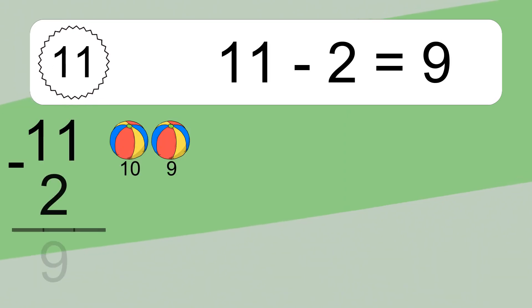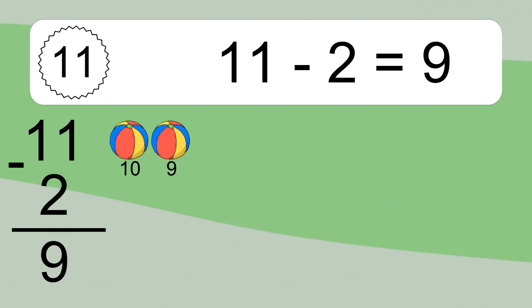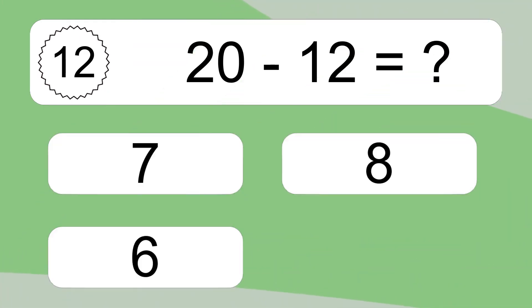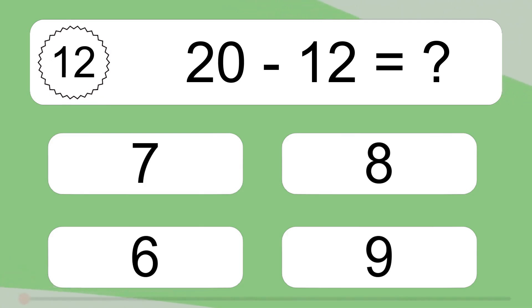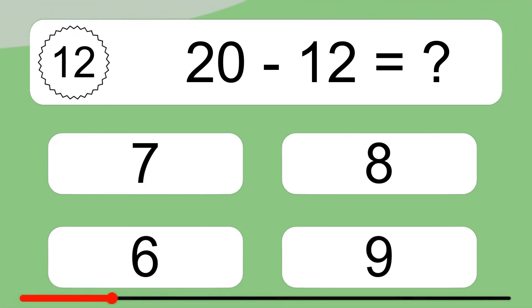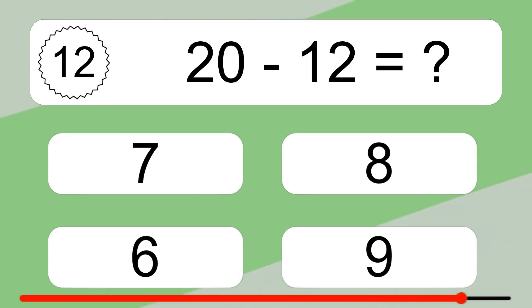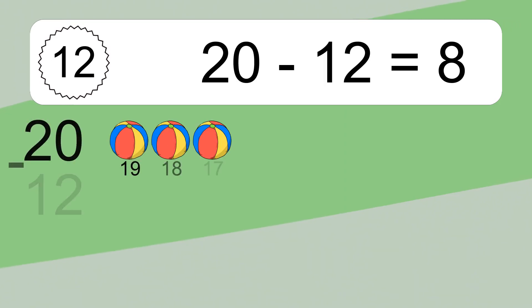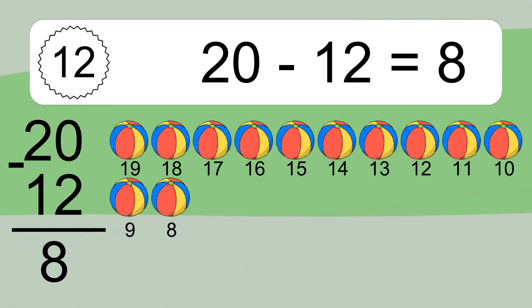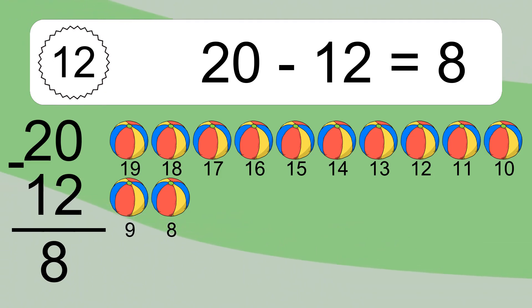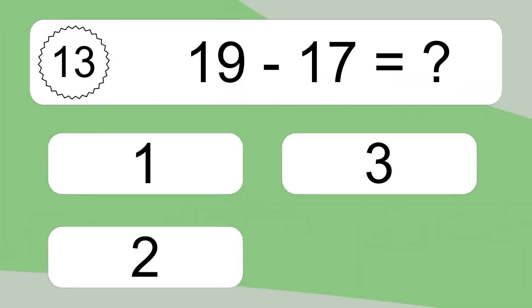11 minus 2 equals what? 11 minus 2 equals 9. Let's count it: 10, 9. 20 minus 12 equals what? 20 minus 12 equals 8. Let's count it: 19, 18, 17, 16, 15, 14, 13, 12, 11, 10, 9, 8.